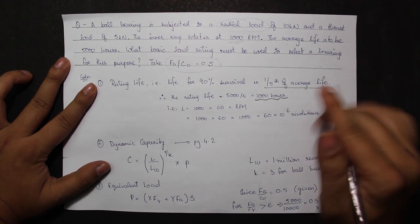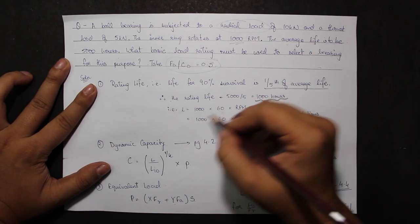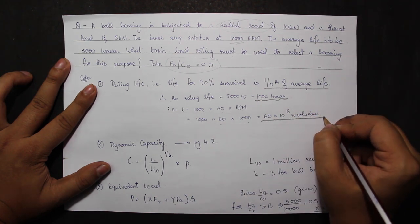Calculating the number of cycles, I get 1000 into 60 into the rpm or 1000 into 60 into 1000, that is 60 into 10 to the power 6 revolutions.